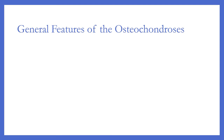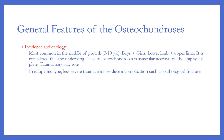General features of osteochondrosis — incidence and etiology: most common in the middle of the growth period, ages 3 to 10 years old; boys are more commonly affected than girls; lower limb involvement is more common than upper limb. The underlying cause is considered to be epiphysial avascular necrosis of the epiphysial plate. Trauma may play a role.